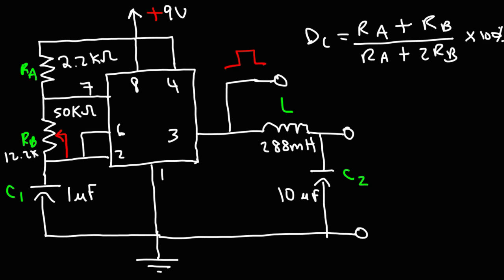But one of the most simplest ways to achieve a duty cycle of 50% is to make sure that RB is significantly greater than RA. When that happens, if RB is much larger than RA, these two terms become negligible. So you get 1RB over 2RB. And it becomes approximately 50%. 1 over 2 is 1 half. So let's do the math for the numbers that I have in this video. So RA is set to 2.2k. Since the units are the same, we don't have to plug it into the formula.